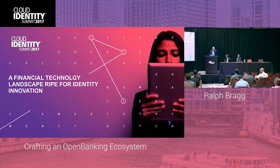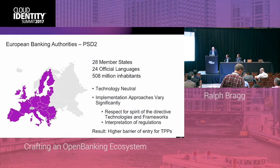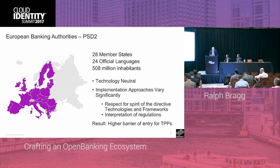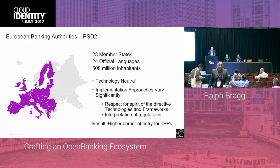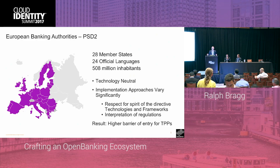So where are we today? We have a financial technology landscape that's ripe for identity innovation. We've already touched on PSD2 — the European Banking Authority's Payments Services Directive. We've got 28 member states, 24 official languages, 508 million inhabitants. It's technology neutral, which allows for a huge amount of interpretation. It allows individual banks and individual national competent authorities to all come up with their own standards and their own ways of trying to address this change.